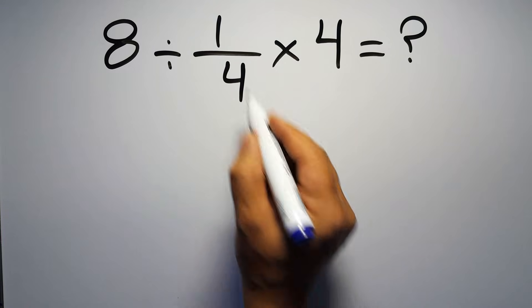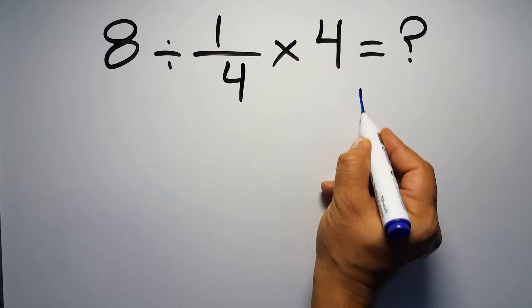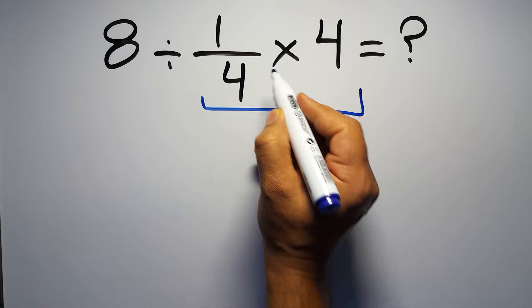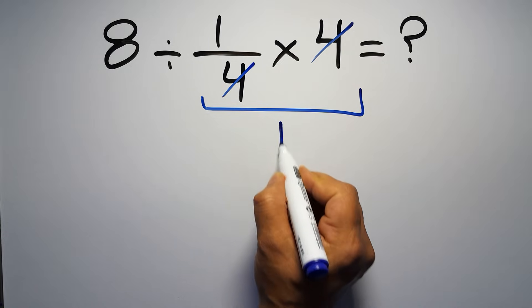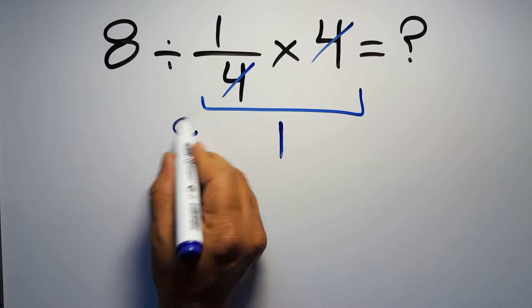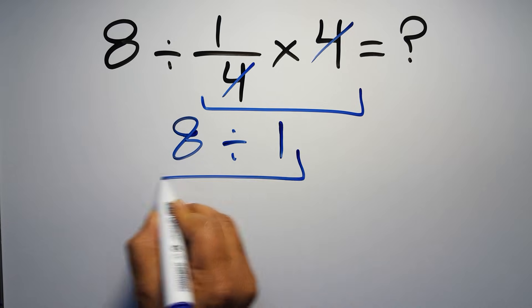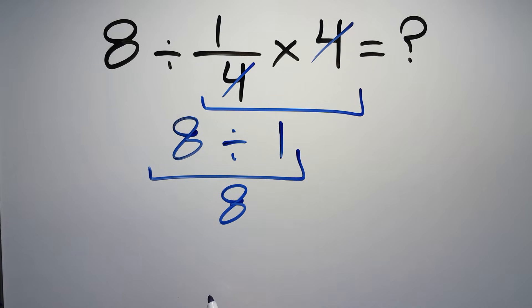First we do this multiplication 1 over 4 times 4. We can easily cancel this 4 and this 4, so here we have just 1, and 8 divided by 1 equals 8. But this answer is not correct because according to the order of operations, multiplication and division have equal priority.